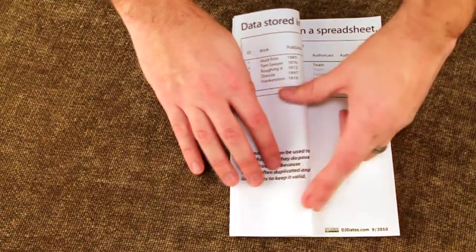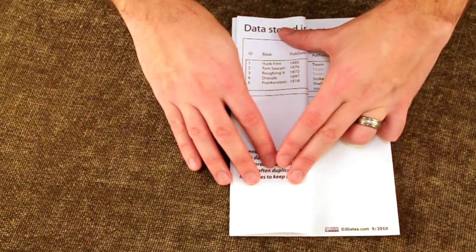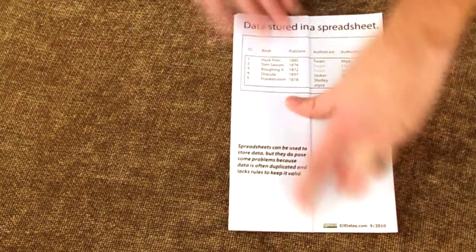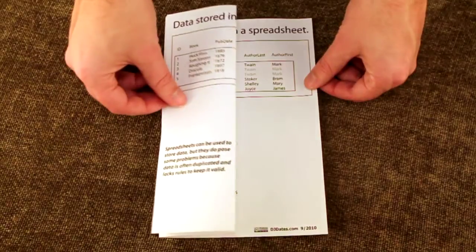Half of the sheet is folded again, but this time in the opposite direction. This creates a series of folds that hides the middle half of the sheet, containing the relationship and keys, until the pamphlet is fully opened.